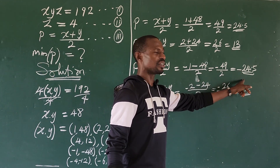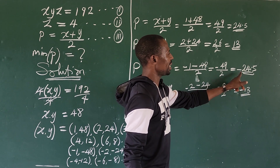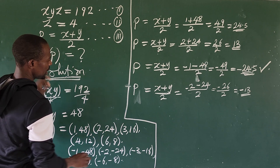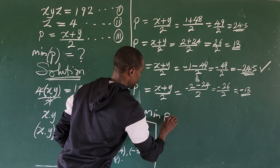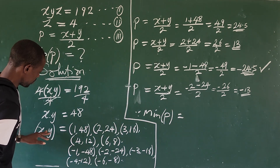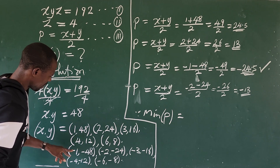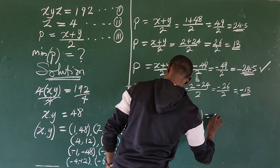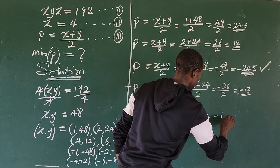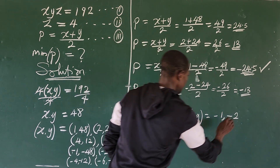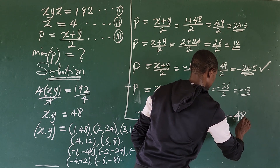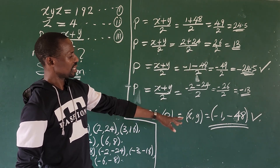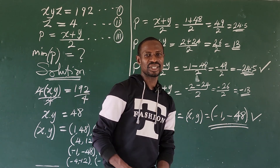Since we are looking for the minimal — that is, the lowest — value, the minimum point is given by x equals −1 and y equals −48. Therefore, the minimum value of p is −24.5, occurring at the pair (x, y) = (−1, −48).